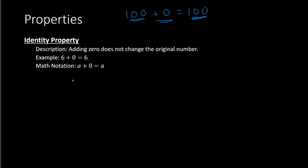A way to remember this property is to think of the word identity. If you are told that someone is changing their identity, that means they're changing the way they look. So in this context with math, the identity property says that we're not changing the way the number looks. We started with a number — say 100 — that's the original look, so to speak. Adding zero doesn't change the way the number looks; it's still going to stay the same. So it does not change the identity or the value of the original number.